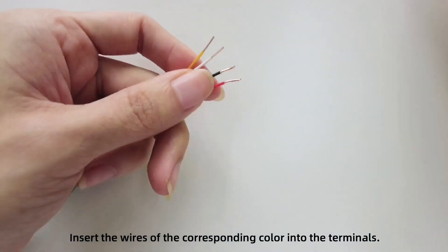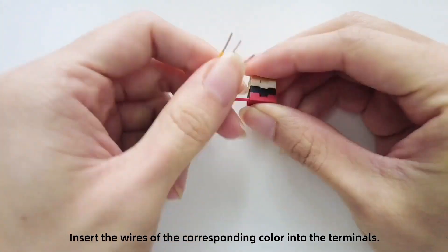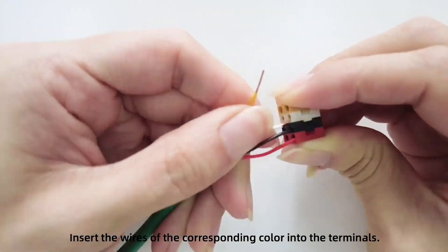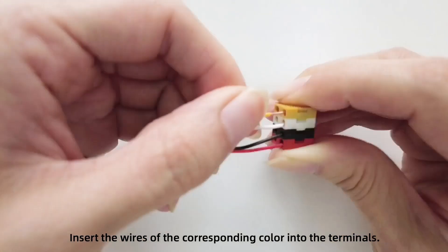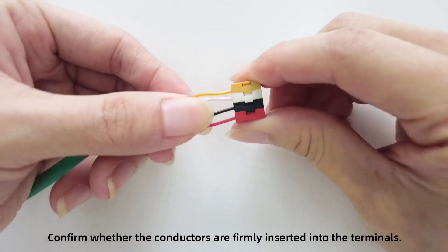Insert the wires of the corresponding color into the terminals. Confirm whether the conductors are firmly inserted into the terminals.